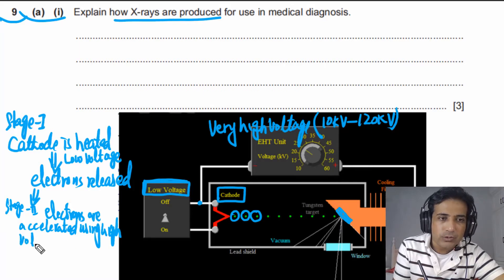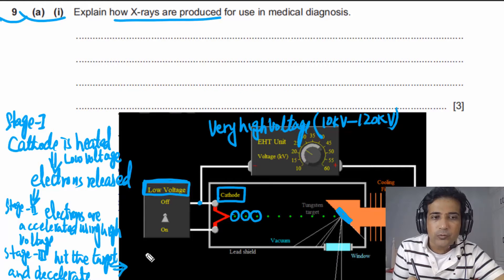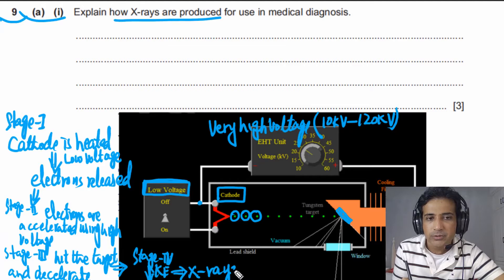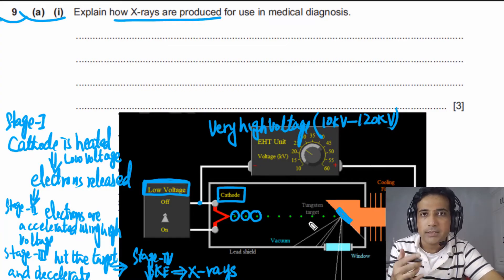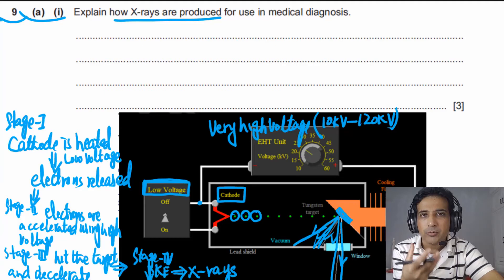In stage 3, the electrons hit the tungsten target and decelerate. In stage 4, the kinetic energy of the electrons decreases, and this decreasing kinetic energy is converted into X-rays. This is how X-rays are produced — by decelerating accelerated electrons.